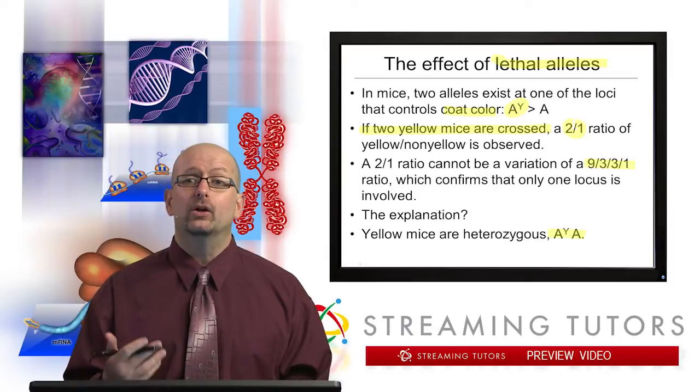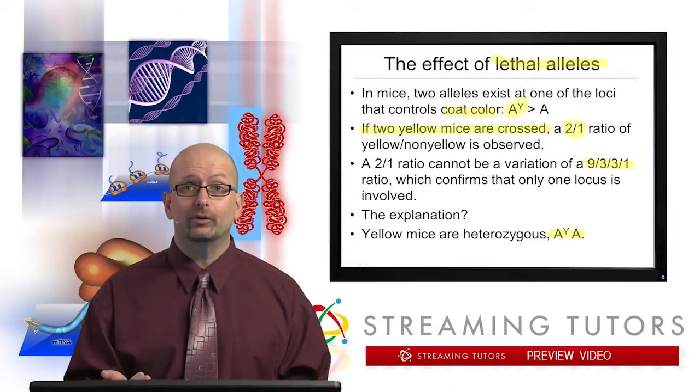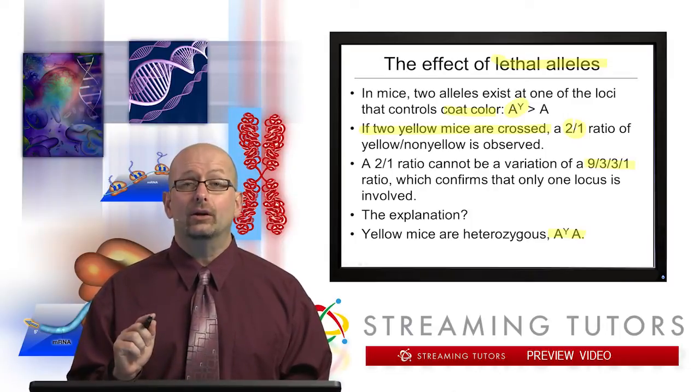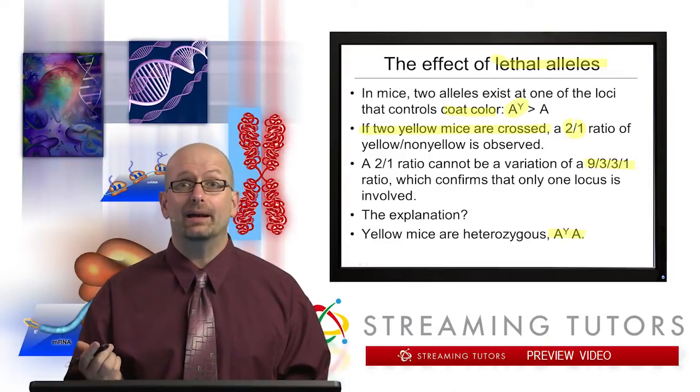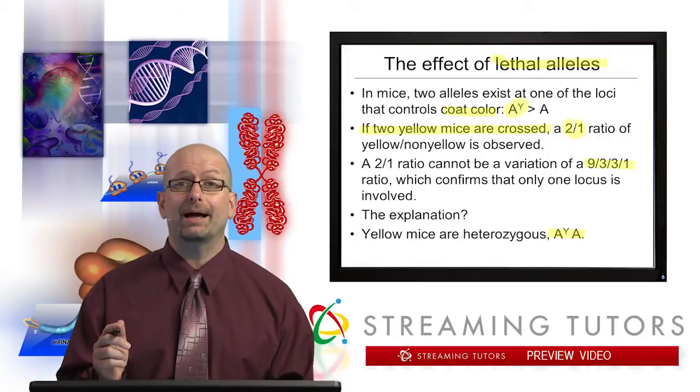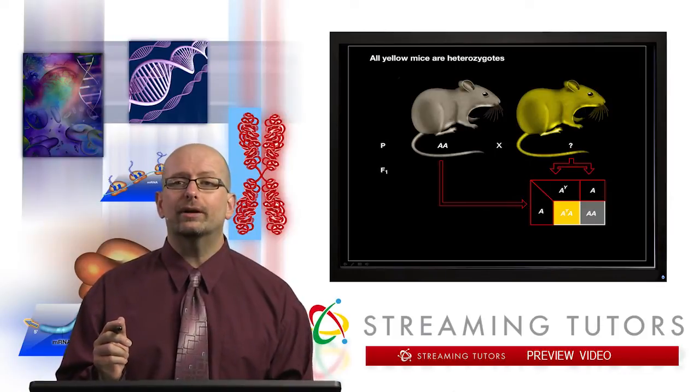regular capital A. You would think under normal circumstances that a yellow mouse could be capital AY capital AY, but we're going to see that that's not possible. But first, let's look at the experiment.